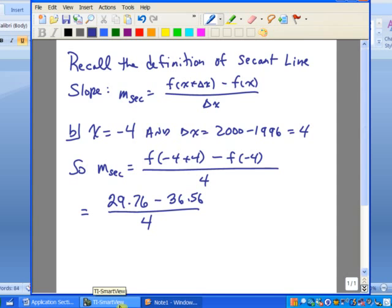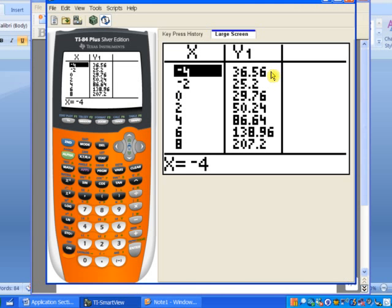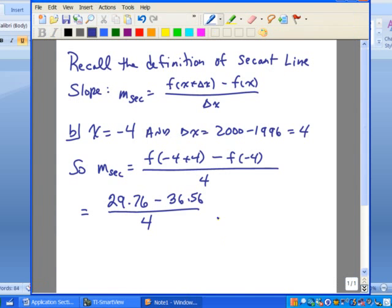Let's take a quick look at our table. f of 0 is 29.76, and f of negative 4 is 36.56. So when we calculate that out, you get negative 1.7.